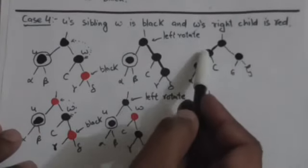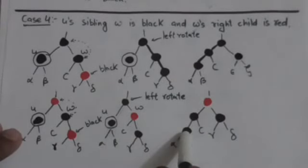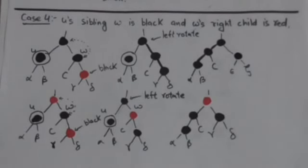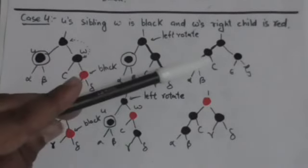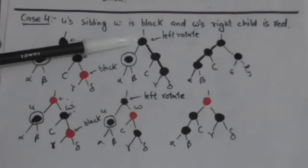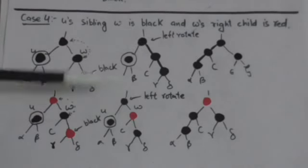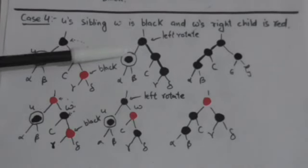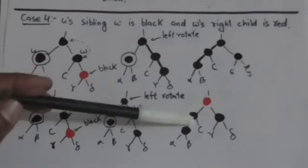The extra black can be removed from node U because the path containing node U has gained a new extra black node through the rotation. So there is no longer a need for the extra black color on node U — node U becomes single black. After performing the left rotation on the parent of node U and removing the extra black from node U, we obtain the final corrected red-black tree.